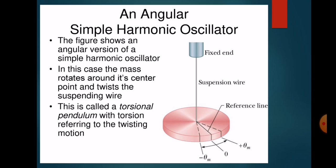After reaching the limit position, the wire is released — from minus theta_m to plus theta_m — and then the twist is released. So in this case the mass rotates around its center point and twists the suspending wire. This is called a torsional pendulum, with the term 'torsion' referring to the twisting motion.